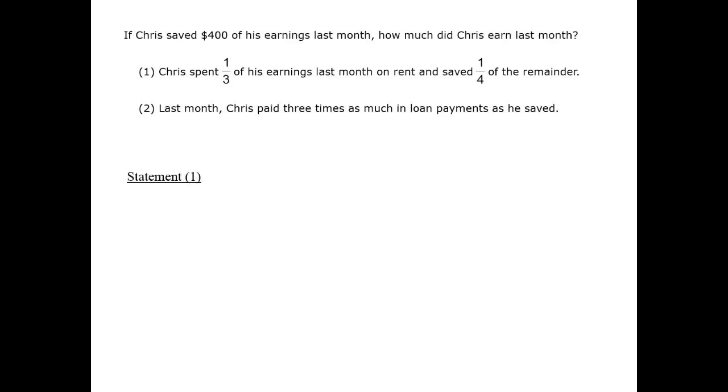First, Statement 1. If Chris's earnings amounted to X dollars, then what Statement 1 is telling us is that he spent one-third X on rent. After doing so, he'll have the total amount minus that amount, so he'll have X minus one-third X left. And of that portion, he saved one-quarter. So the amount that he saved was one-quarter times the quantity X minus one-third X. And we know that amount from the question. That amount is 400.